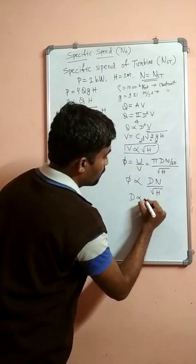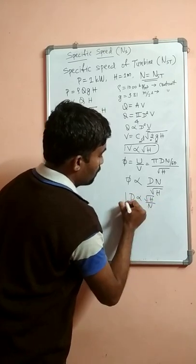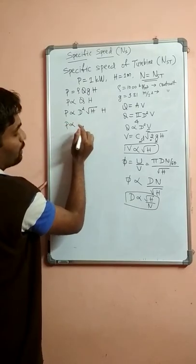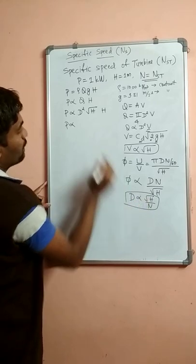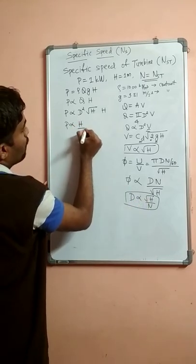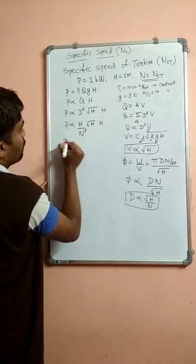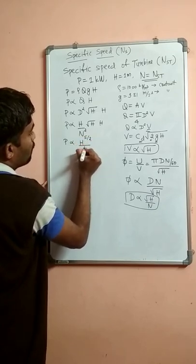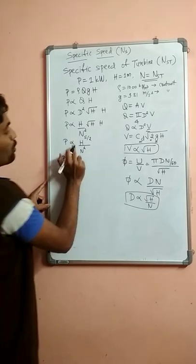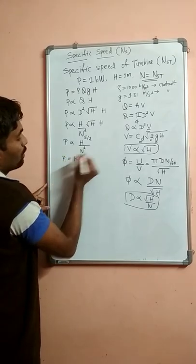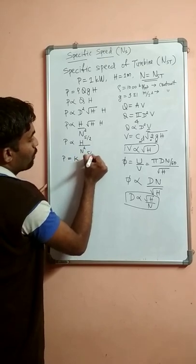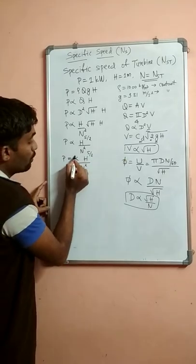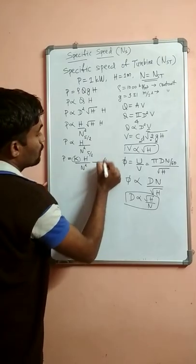Simplifying, we get D is proportional to square root of H by N. Substituting D square, which gives H by N square, combined with square root of H and H, we get altogether H raised to 5 by 2 divided by N square. Removing the proportional sign and introducing a constant K, we write P equals K times H raised to 5 by 2 divided by N square. We call this equation number 1.